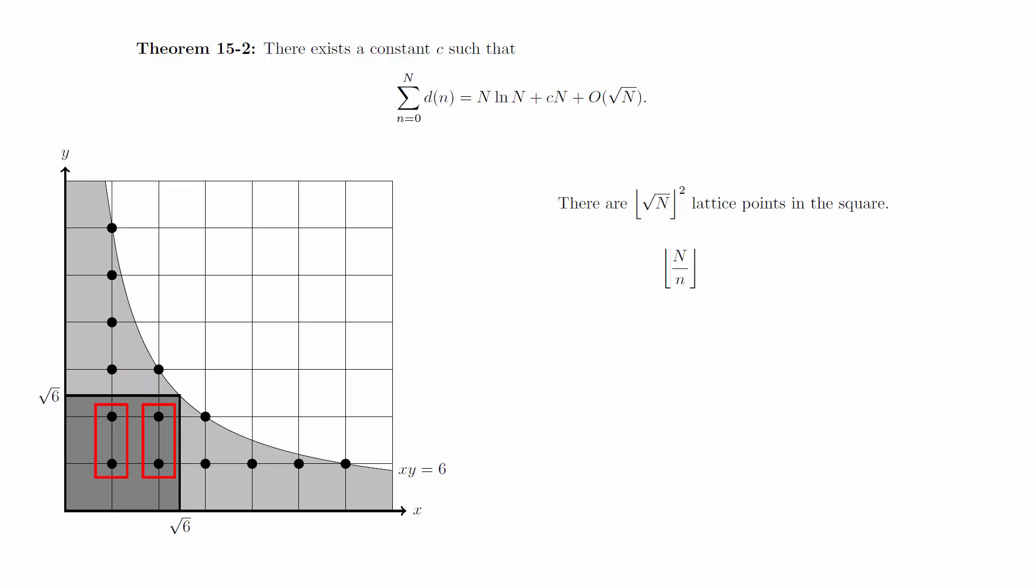But the ones that are below root capital N are in the square and have already been counted, so we need to subtract these off. This means that each vertical line contains the floor of capital N over little n minus the floor of the square root of capital N points in the region.